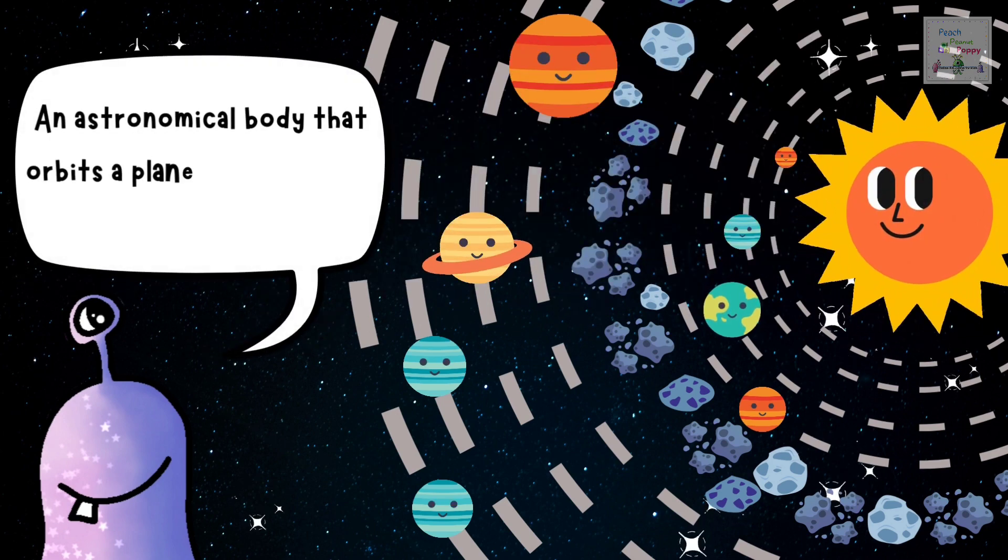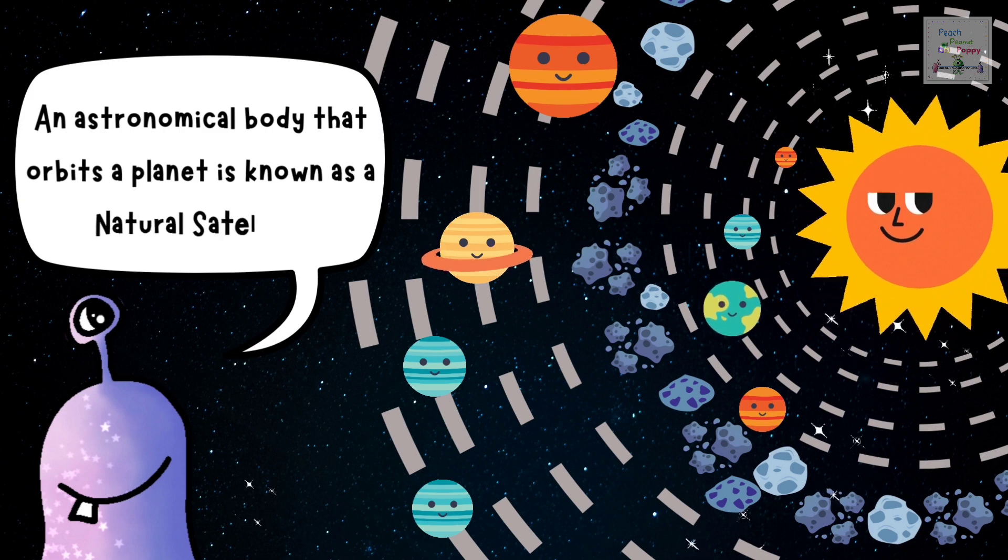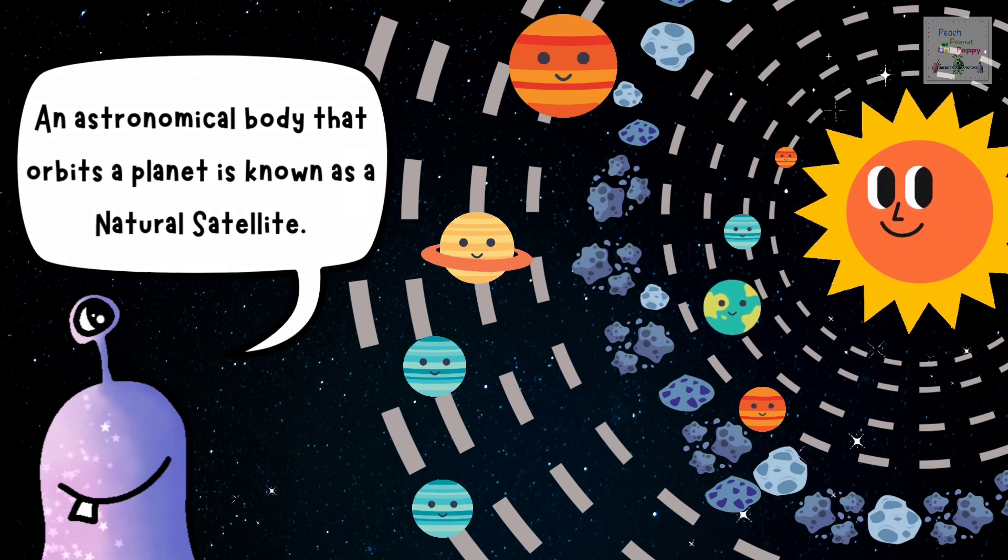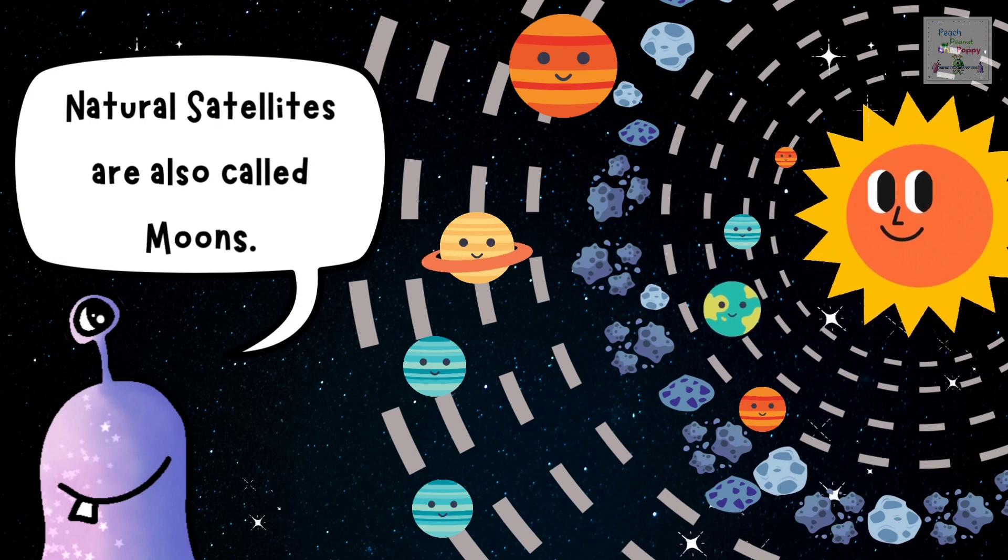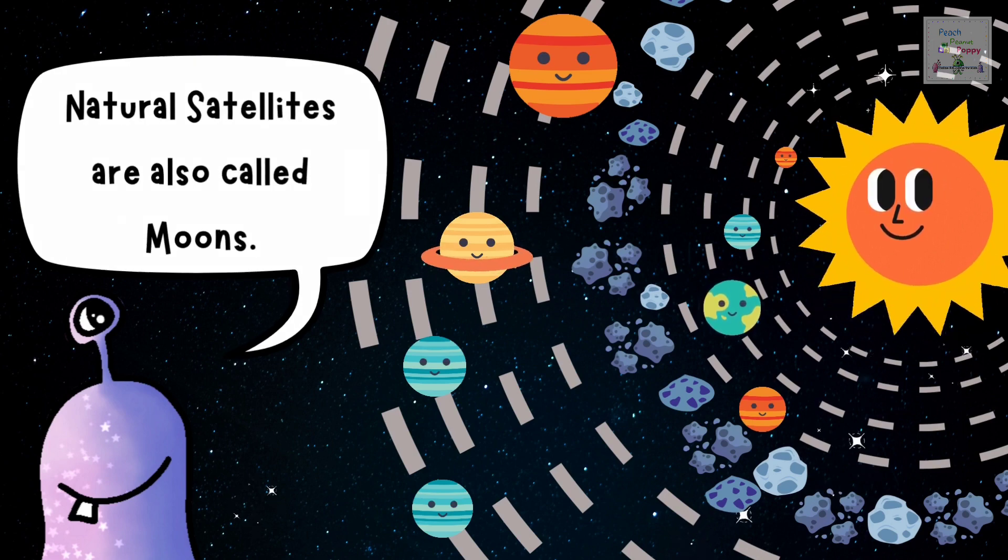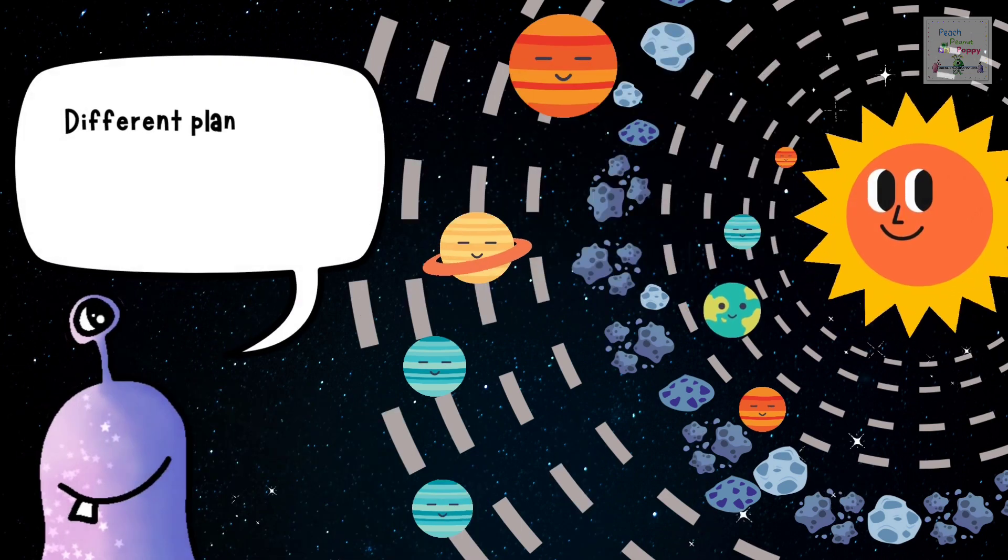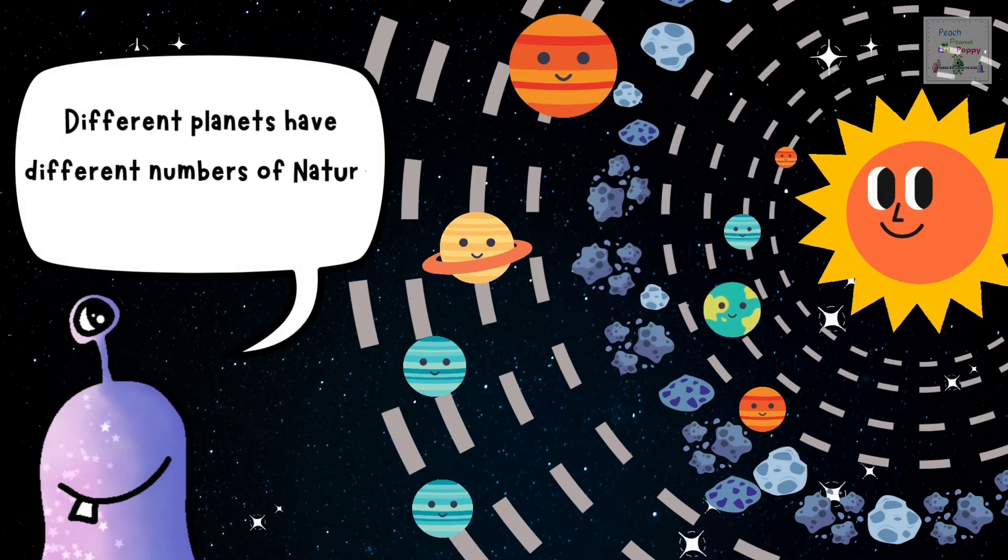An astronomical body that orbits a planet is known as a natural satellite. Natural satellites are also called moons. Different planets have different number of natural satellites or moons.